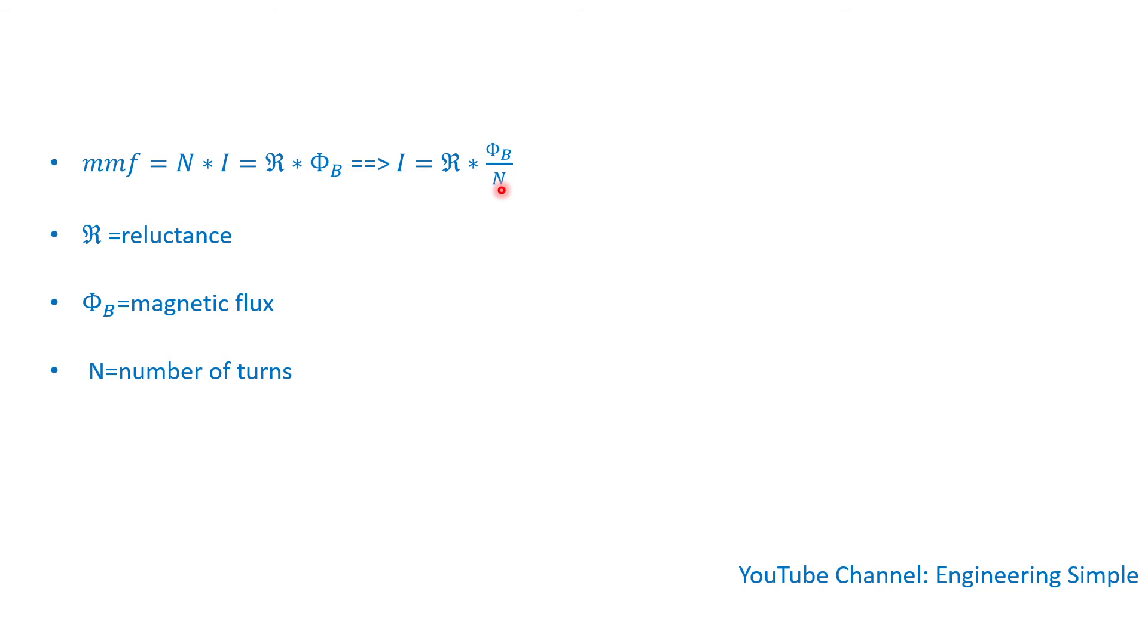Another thing, if some turns are shorted, the current will be higher. So this formula gives us some insight of what's going on around the core and the windings.